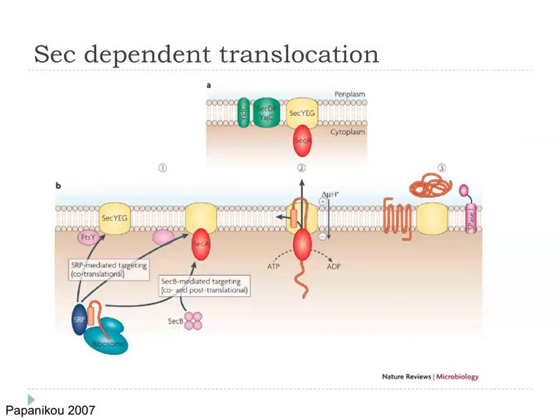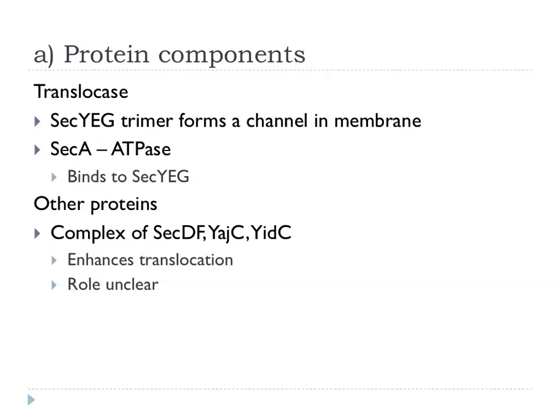There are a number of players involved. If we look at how proteins get across the inner membrane, there is this membrane-spanning complex SecYEG. There is a series of proteins involved in targeting proteins for secretion, and then there's SecA, which is the ATPase that energizes the process and drives proteins through the SecYEG pore. We often talk about the translocase as this whole complex involved in pushing proteins through — SecYEG forming a channel in the membrane, and SecA as the ATPase binding to this complex.